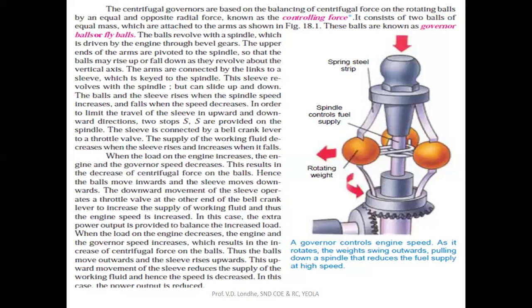This system is based on two balls of equal mass which are attached to the arms. These balls revolve with the spindle, which is driven by the engine through the bevel gear. As the system rotates, a sleeve is attached at the lower part. As the balls move outward due to centrifugal force, the sleeve tries to move upward, which controls the fuel supply going to the engine.